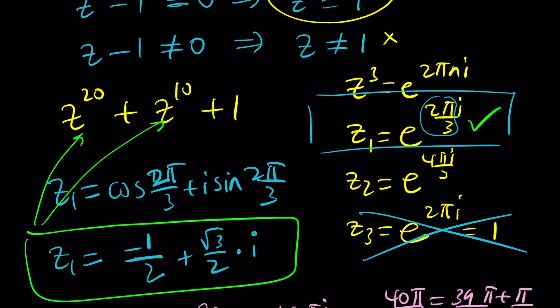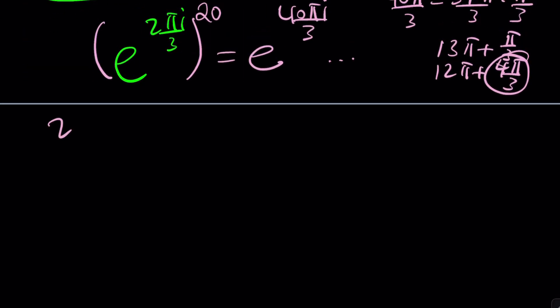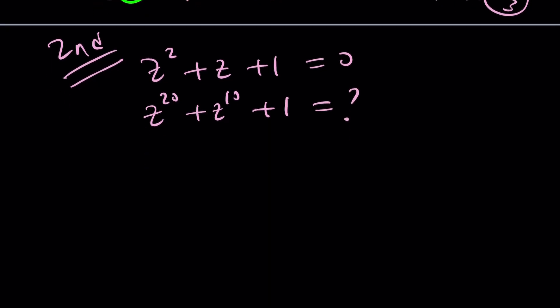The second method is going to be hopefully nicer. We have z² + z + 1 = 0 and we're supposed to evaluate this. Here's what I'm going to do. I'm going to use the fact that z³ = 1 because that was so valuable and I obviously skipped it on purpose because I saved it for the second method.